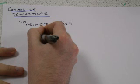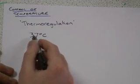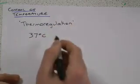This is control of temperature or thermal regulation as it's also known. Now the human body maintains itself at approximately a body temperature of 37 degrees Celsius. Now this is slightly different in different parts of the body.